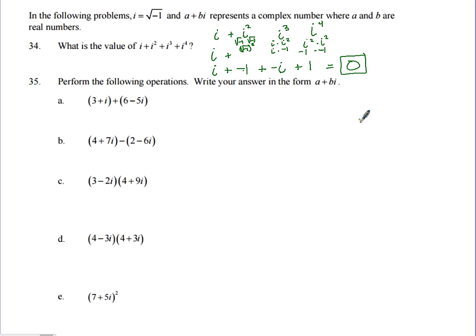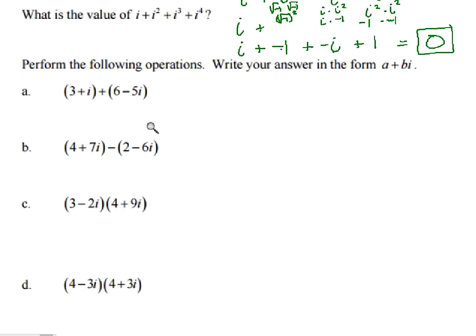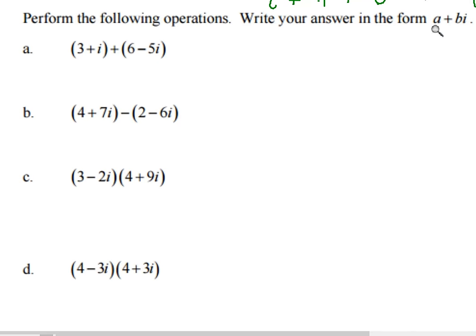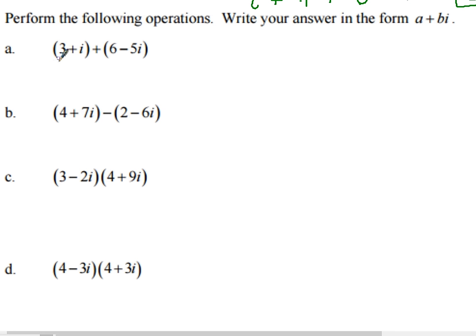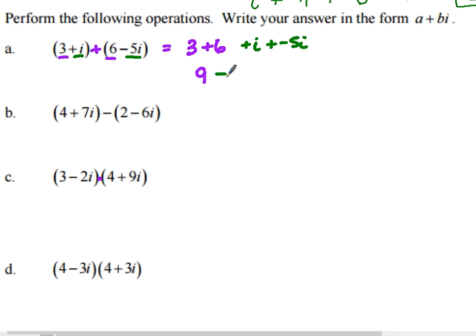Now we perform operations on complex numbers, writing answers in a plus bi form. Be careful — students often see parentheses and think they need to multiply, but check for the plus sign indicating addition. Here, adding: 3 plus 6 equals 9 for real parts, and i plus negative 5i equals negative 4i for imaginary parts. So the result is 9 minus 4i.